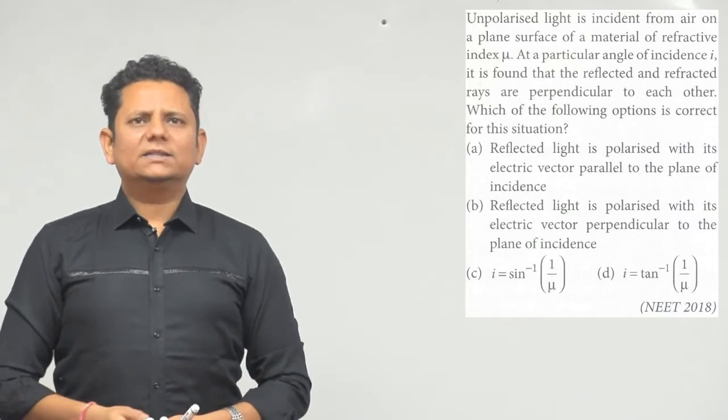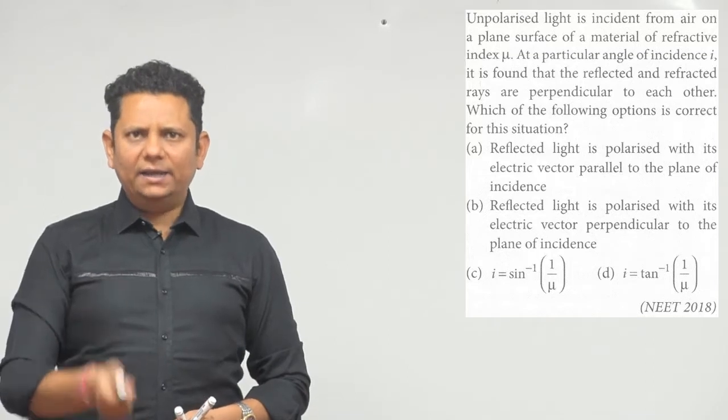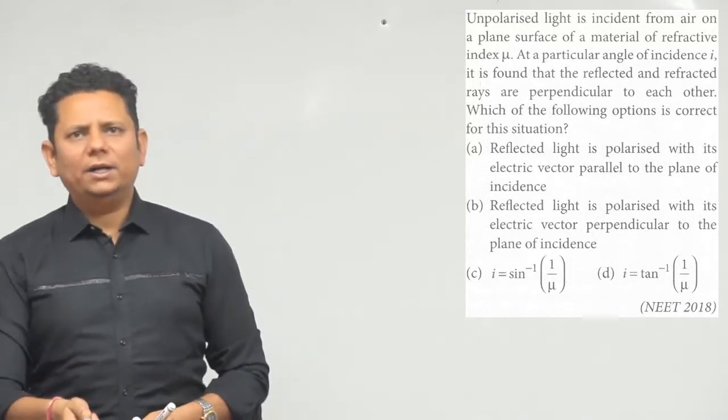Next question. The question says unpolarized light is incident from air on a plane surface of material of refractive index mu. At a particular angle of incidence I, it is found that the reflected and refracted rays are perpendicular to each other.